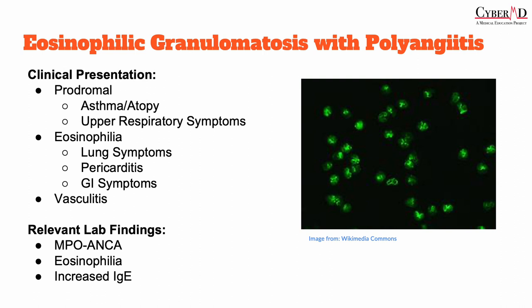The vasculitic phase follows, which includes skin nodules, mononeuritis multiplex, palpable purpura, and pauci-immune glomerulonephritis. Constitutional symptoms are often present throughout all three phases, and features from all phases may be present at the same time without necessarily following a specific order. Eosinophilic granulomatosis with polyangiitis is associated with antineutrophil cytoplasmic antibodies and polyneuropathy such as foot or wrist drop, allergic rhinitis, sinusitis, and asthma. Most importantly, eosinophilia keeps coming back as a distinguishing feature, along with increased IgE levels.